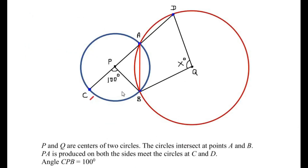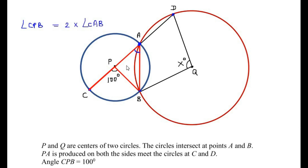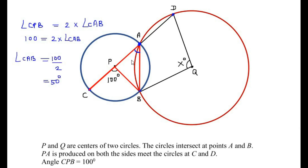Applying this theorem: points B and C make an angle at the center of the circle at point P, and the same two points make an angle at the circumference at point A. So angle CPB (the center angle) equals two times angle CAB. Since angle CPB = 100°, we get 100 = 2 × angle CAB, giving angle CAB = 50 degrees.